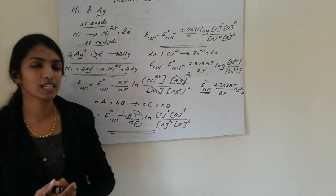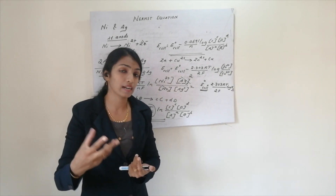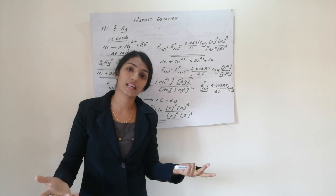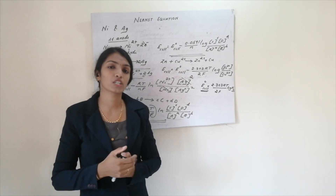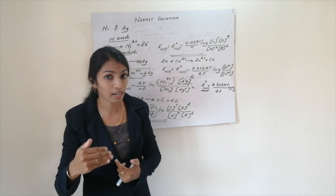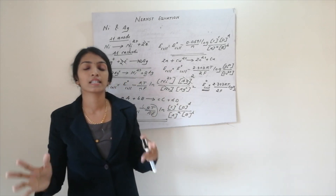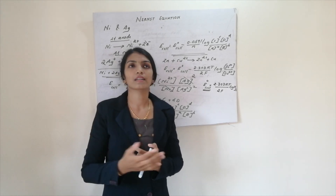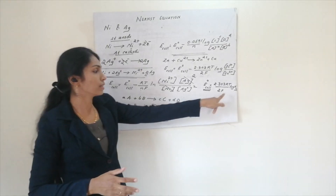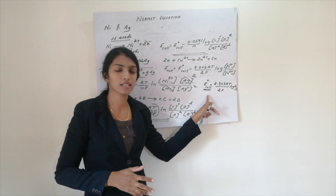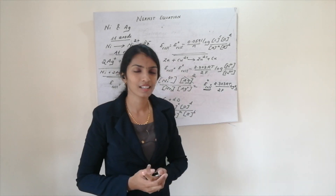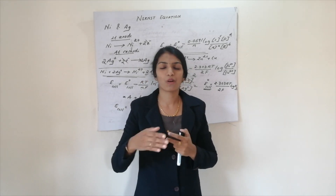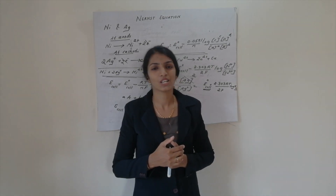Today we discussed the Nernst equation: how to write the potential of the zinc rod, the copper rod, and in general any electrode under non-standard conditions, and how to write the cell potential using the Nernst equation. We also discussed the relationship between the equilibrium constant and the standard cell potential. Thanks for watching; please do subscribe to my channel, as all classes are a continuation of previous lessons.